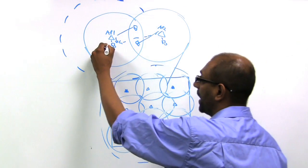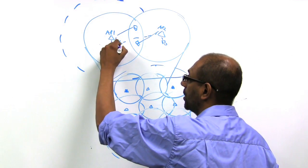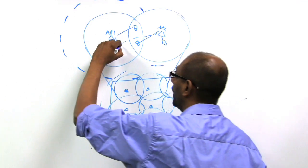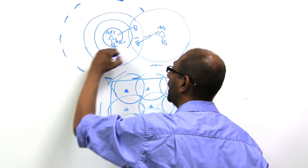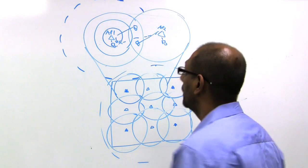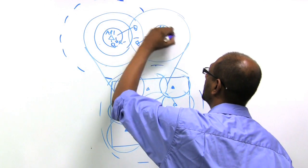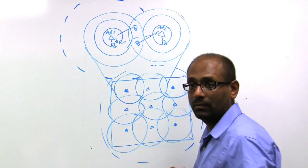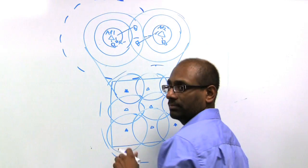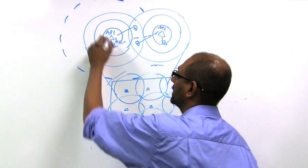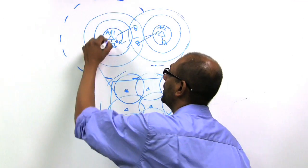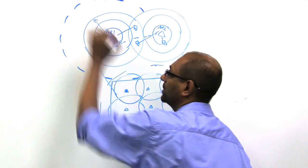So what happens is, every access point advertises all of its traffic, but it also says how far, in terms of signal strength, its intended receivers are. So AP1 says how many receivers it has within, let's say, this circle, how many it has within this circle, and how many it has within this circle.